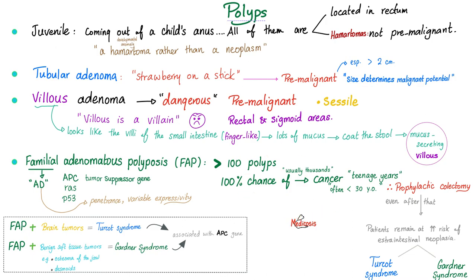Sometimes FAP is associated with brain tumors — so now you have colon cancer and a brain tumor, and it's called Turcot syndrome. How do I remember that? Turcot — turban — turban, head, brain. There is another one called Gardner syndrome, where you have a garden variety of tumors: benign soft tissue tumors, osteomas of the jaw, desmoids, etc.